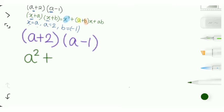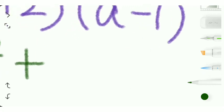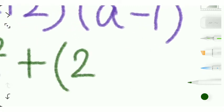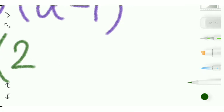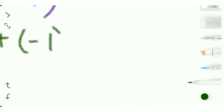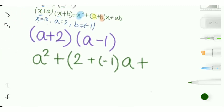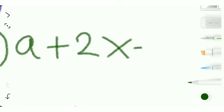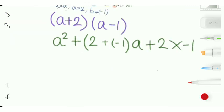Plus (a+b), so what is a? A is 2 and b is minus 1, so we'll write 2 plus minus 1 the whole times a, plus ab. A is 2 and b is minus 1, so we'll write 2 into minus 1. A squared as it is.